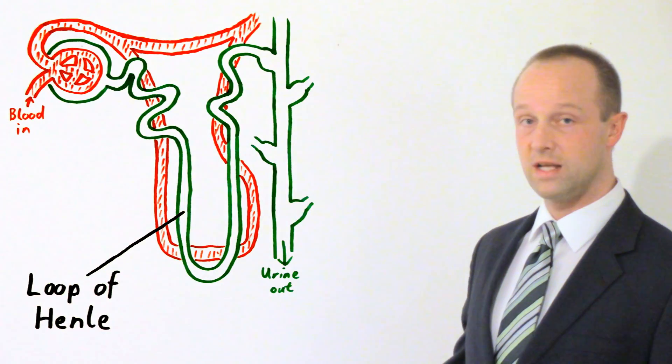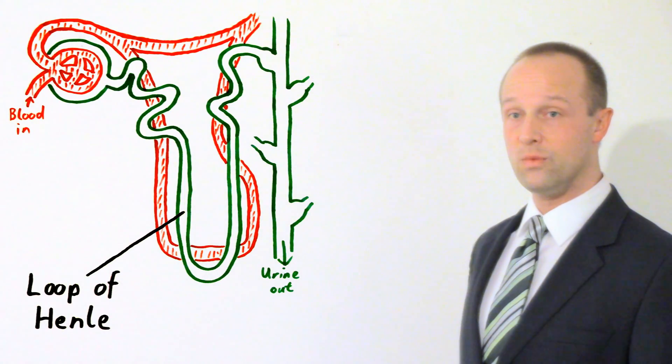But in this case it's the ADH which is important. Now what the ADH does is controls the amount of water which is reabsorbed by the kidneys. If you're becoming dehydrated the pituitary gland releases more ADH. And what effect that ADH has is mainly found in the loop of Henle here within the kidneys.